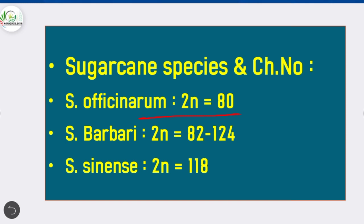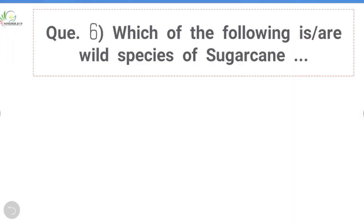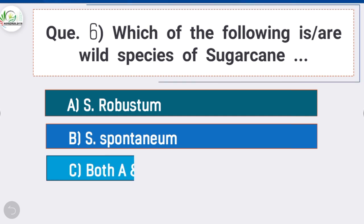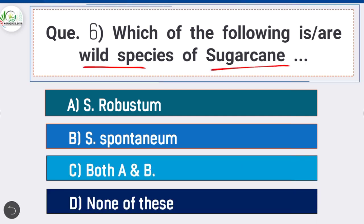Saccharum barberi, also known as Indian cane, has chromosome number 2n = 82 to 124. Saccharum sinense, also known as Chinese cane, has chromosome number 2n = 118. Question 6: Which of the following are wild species of sugarcane? Option C is correct: both Saccharum robustum and Saccharum spontaneum.